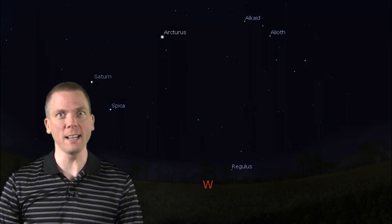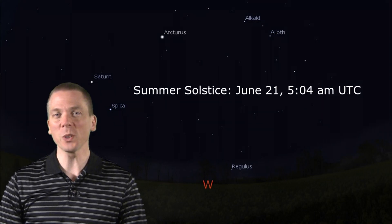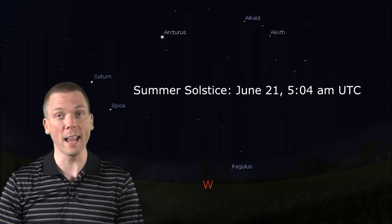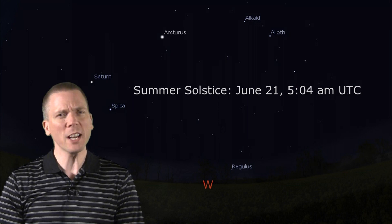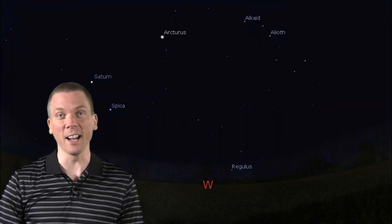Can you believe it is summer already in the Northern Hemisphere? The solstice occurs officially at 5:04 AM Universal Time on June 21st, so what changes can we expect to see in the night sky for summer?